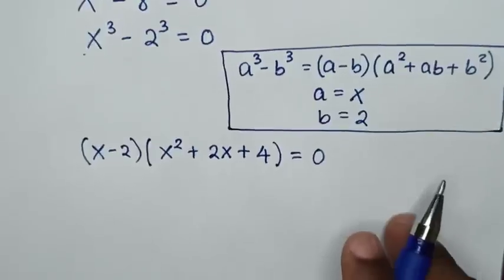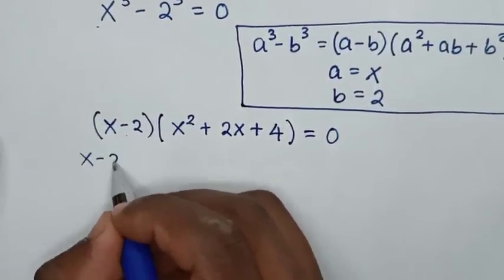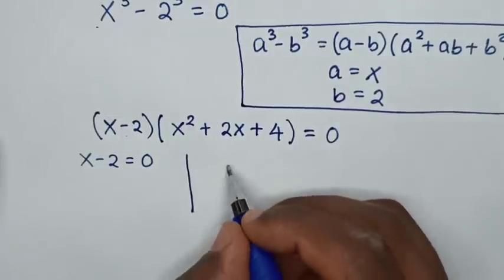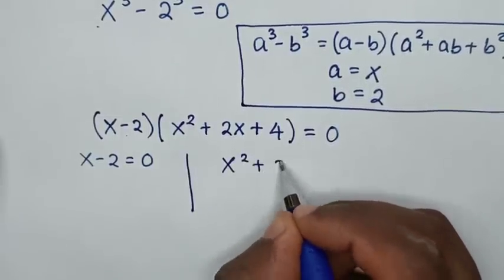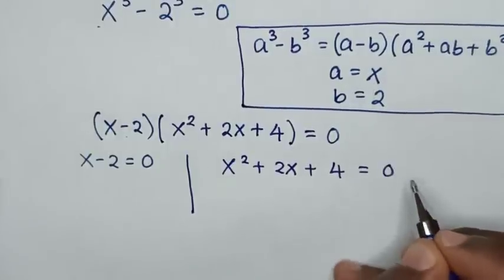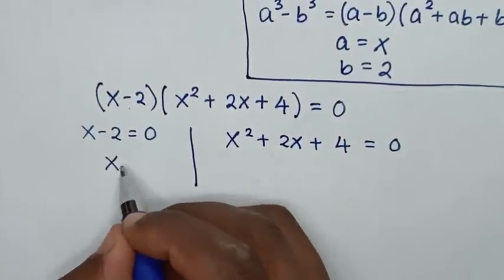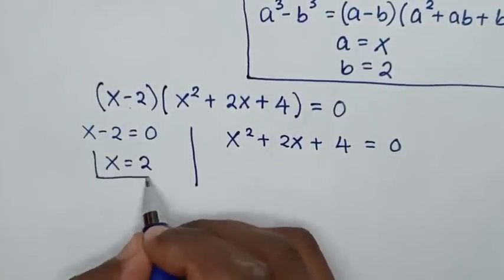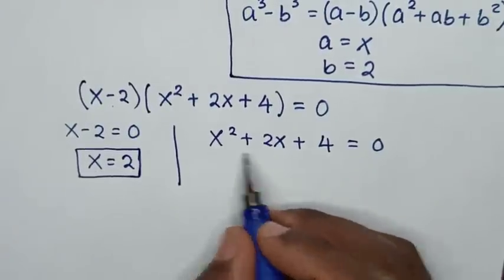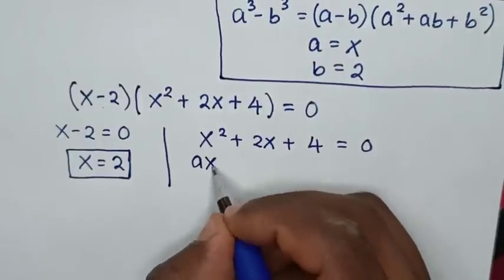In our equation we have two solutions. The first solution is x - 2 = 0, and the other solution is x² + 2x + 4 = 0. From the first solution, taking 2 to the right side gives x = 2.